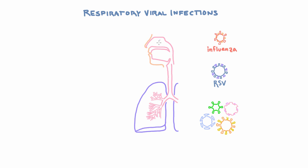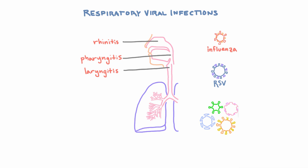So what do these viruses generally do? They infect the respiratory tract, and based on that we can figure out what clinical presentations they can have. Starting from the top, they can infect the nasal cavity, giving you rhinitis — inflammation of the nose. They can also infect the pharynx, giving you pharyngitis, and they can infect the larynx, giving you laryngitis. All of this is in the upper part of the respiratory tract, so we refer to this as an upper respiratory tract infection.